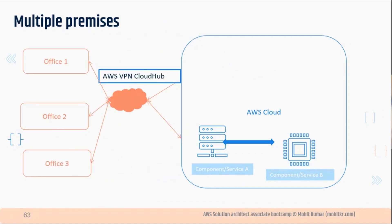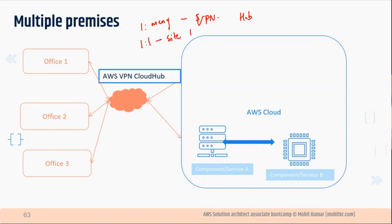VPN CloudHub is a centralized service used when you need to connect multiple offices. Rather than having one-to-one connectivity, you can use CloudHub as a centralized VPN hub — it is an extension of Site-to-Site VPN. For one-to-many connectivity across many offices, use VPN CloudHub. For one-to-one connectivity, use Site-to-Site VPN. For user access, use Client VPN.